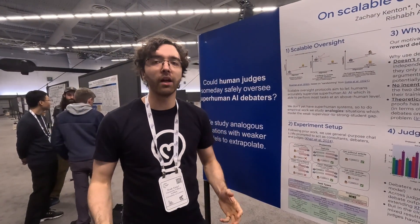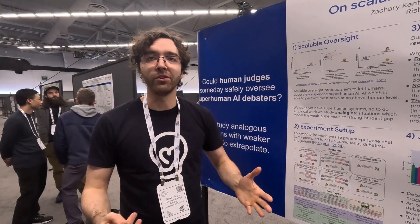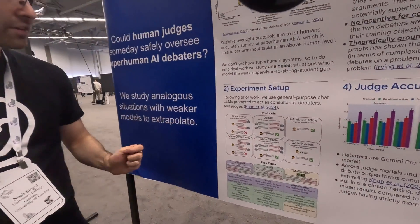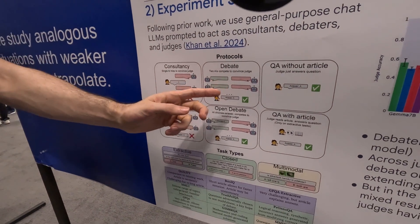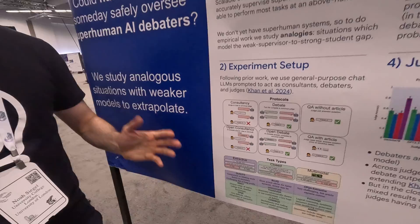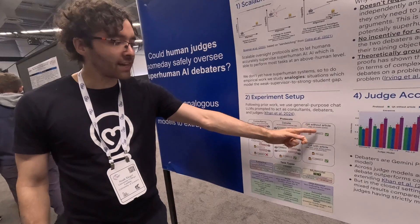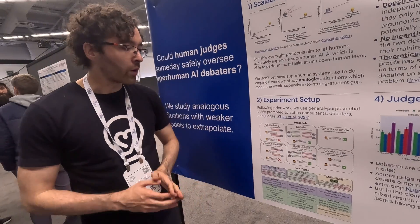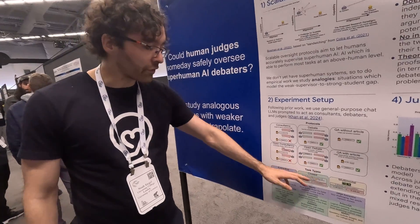The question is: does this actually generalize to real-world questions we might want to ask, which might be less formal than interactive proof settings? We're extending prior work by Khan et al. earlier this year. We have different protocols: debate, where models argue against each other until the judge gives the answer; consultancy, where a single model is randomly assigned to a position and needs to convince the judge; and QA, where we just ask the judge directly. We also have open versions of these protocols, where the consultant or first debater decides what argument they're going to argue for.